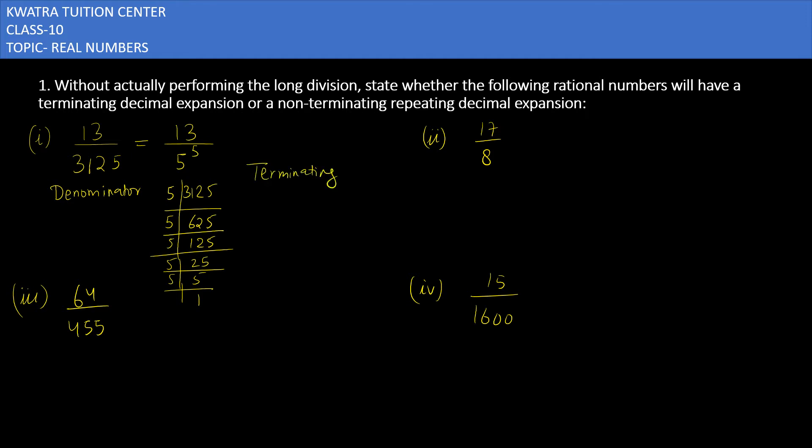Now let's move to the second part. It is 17 over 8. Now how can you write 8? It will be 2 to the power 3. And if it is 2 to the power 3, then this means this is terminating. If there is a factor that will be 2 raised to the power m or 5 raised to the power n, then it will be terminating. Otherwise it will be non-terminating.